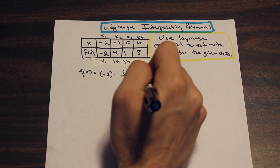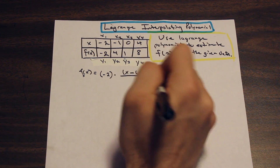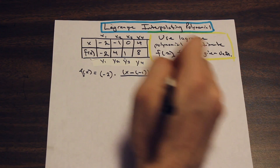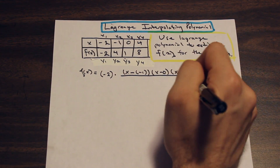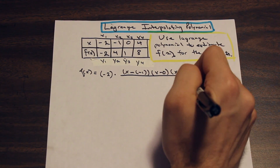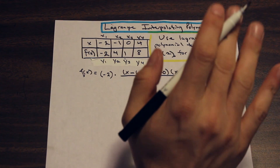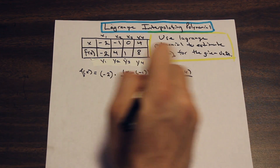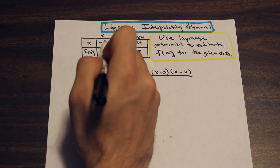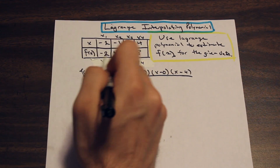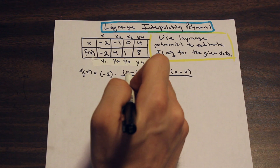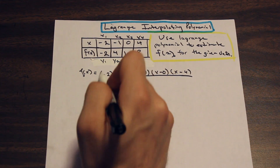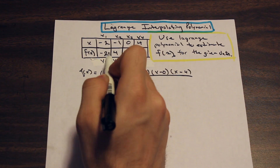We subtract x2 from x, then subtract x3, then subtract x4. That's it for the numerator — easy and straightforward, no long formulas. The whole numerator expression is then multiplied by y1.